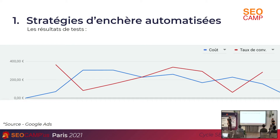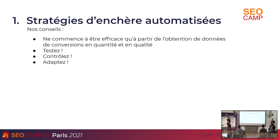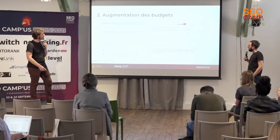On ne peut pas juste se contenter d'activer le CPA. De temps en temps ça va fonctionner, mais il faut toujours contrôler avec un humain qui va vérifier que ce taux de conversion n'est pas en train de s'effondrer. Il faut un nombre de conversions suffisamment élevé — Google parle en général de 30 à 50 conversions par mois. Tester, contrôler, adapter — c'est vraiment quelque chose à contrôler, contrairement à ce que dit l'automatisation. Ce n'est pas encore tout à fait le cas, selon nous.